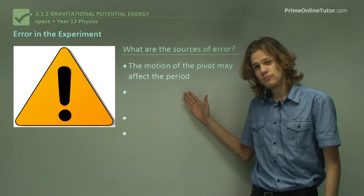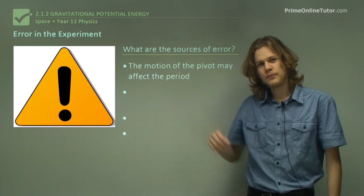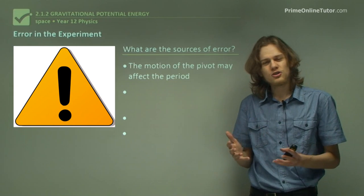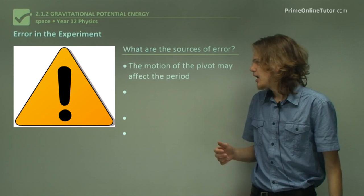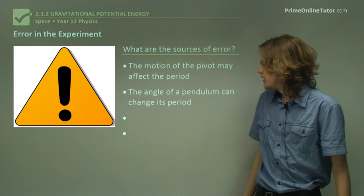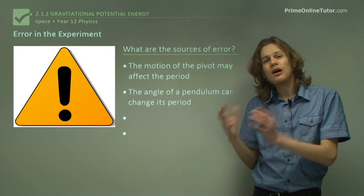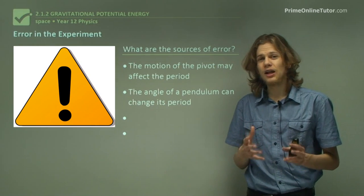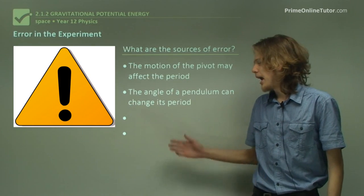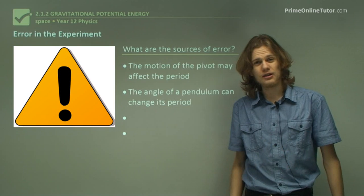One source of error could be that the motion of the pivot would affect the period. If I'm holding the pivot, it's not perfectly straight. Even if it was attached to a retort stand, various vibrations on the table could cause the pivot to change slightly, meaning the period of the pendulum would change a little. Another problem might be that the angle could be too large — for very large angles, the period gets increasingly larger and doesn't quite follow the equation we're using, thus affecting our estimation of gravitational acceleration.